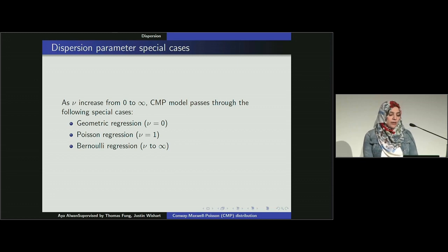As nu increases from zero to infinity, it passes through special cases. As nu equals zero, it gets geometric distribution where you count number of trials till first failure. As nu equals one, it's Poisson distribution. As nu goes to infinity, it shows the zero-one property of success and the probability mass function lambda divided by one over lambda. That's Bernoulli. It covers a very big range of dispersion, zero to infinity. The dispersion parameter should be greater than zero. For over-dispersion, nu is less than one. For under-dispersion, nu is greater than one.